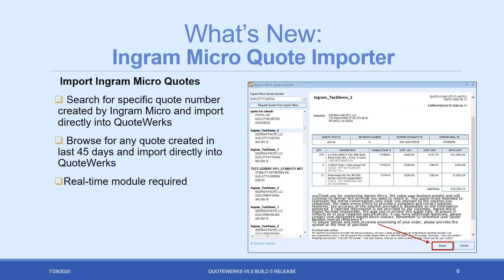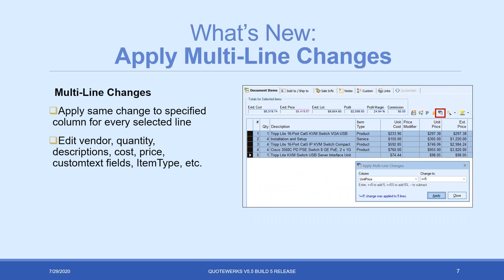The Ingram Micro quote importer will appear on the grid toolbar in your QuoteWorks installation. It allows you to search for a specific quote number from Ingram Micro — if your Ingram rep has created a quote, you can copy and paste that number into QuoteWorks and import it. You can also browse any quotes created within the last 45 days. This requires the real-time module and an Ingram Micro account. There is some setup involved — you need to create a quote importer account with Ingram Micro, with instructions available in the help file.